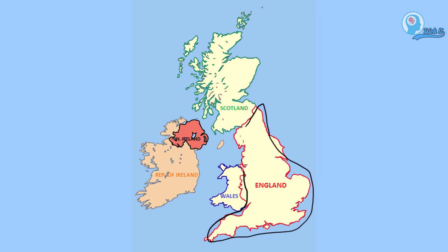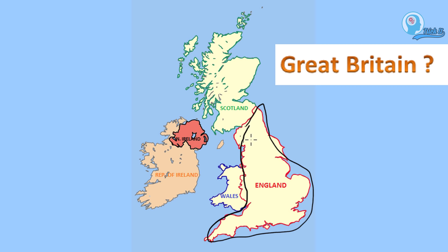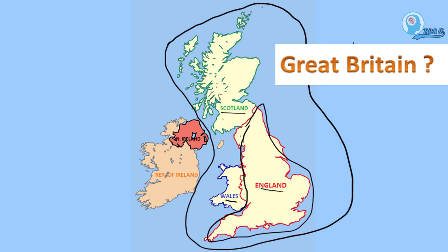Now, what is Great Britain? Great Britain consists of total three countries. First is Scotland, second is England and third is Wales. When we combine these three countries together, that is called as Great Britain.